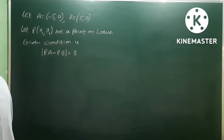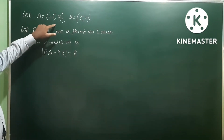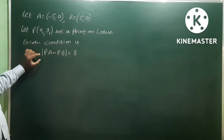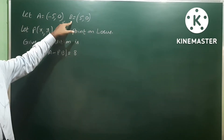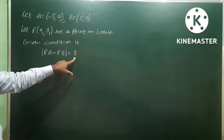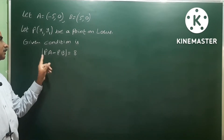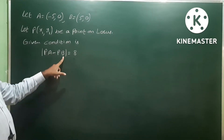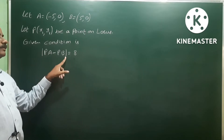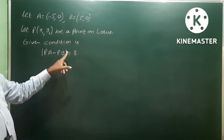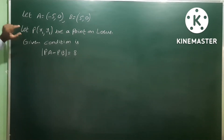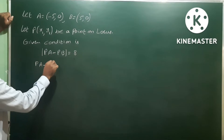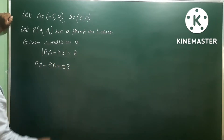Okay, next problem. A is minus five comma zero, B is five comma zero — two points. This is a locus problem. The difference of distances from the locus point to these two points is eight. So PA minus PB equals eight. We take modulus for the difference of distances, so |PA - PB| = 8. This is our condition. Note this is not simply PA minus PB equals a value — we take plus or minus.